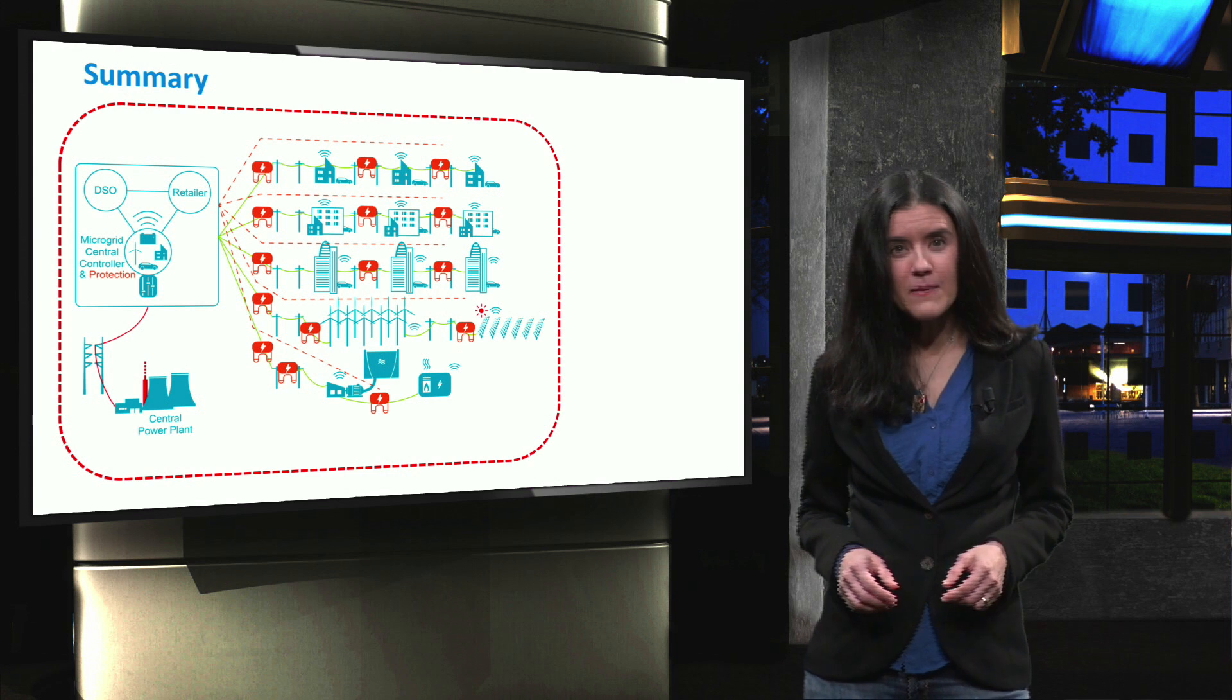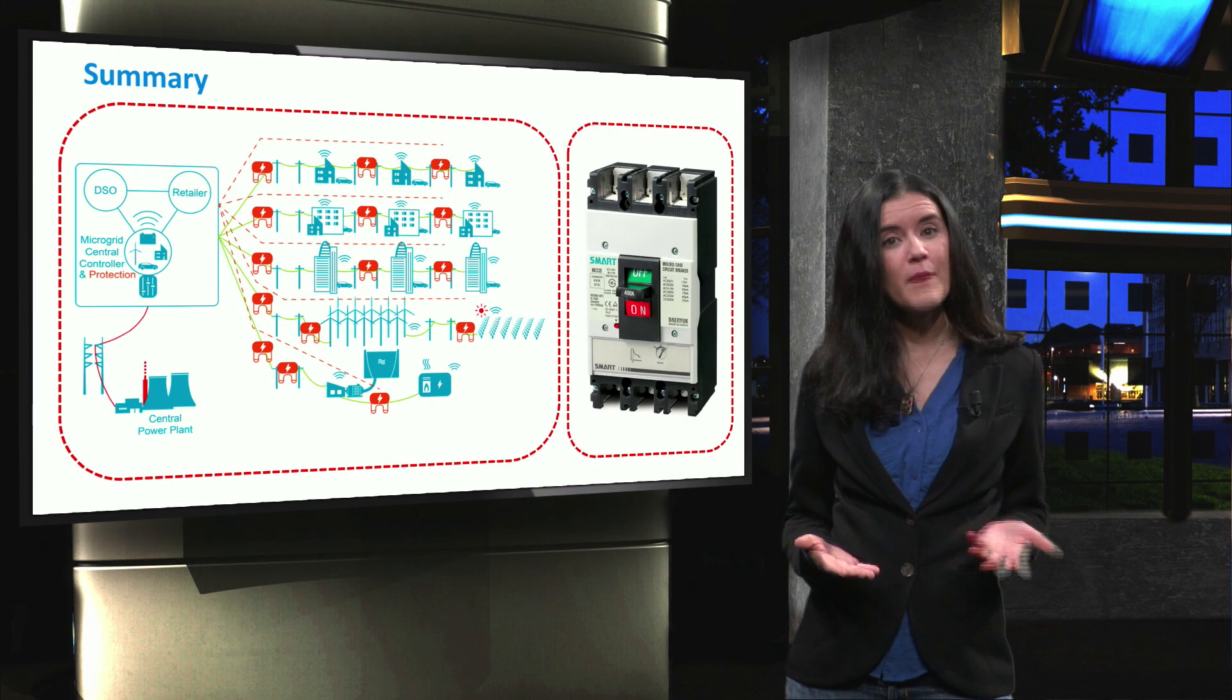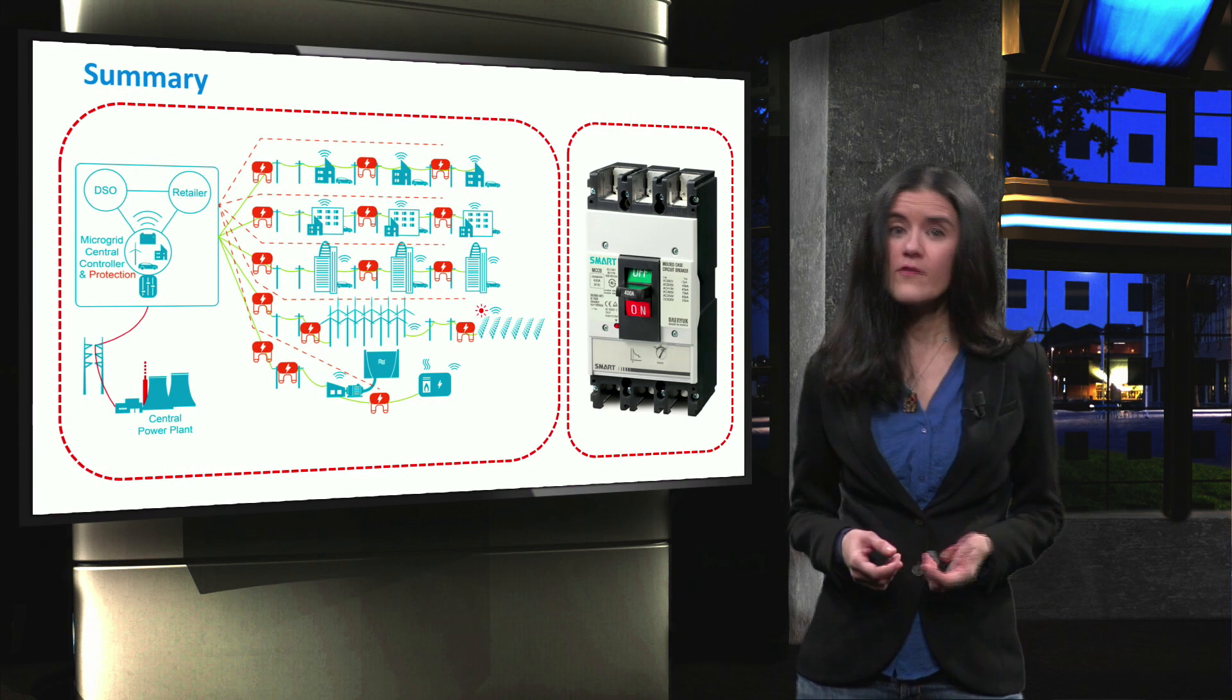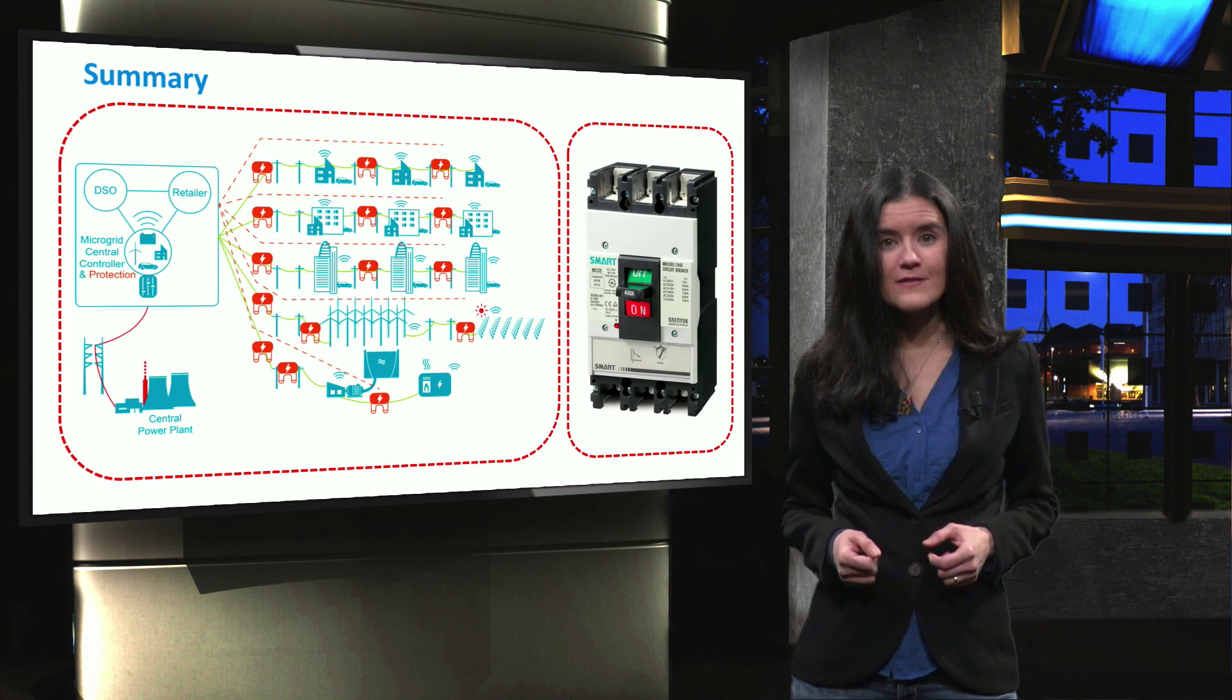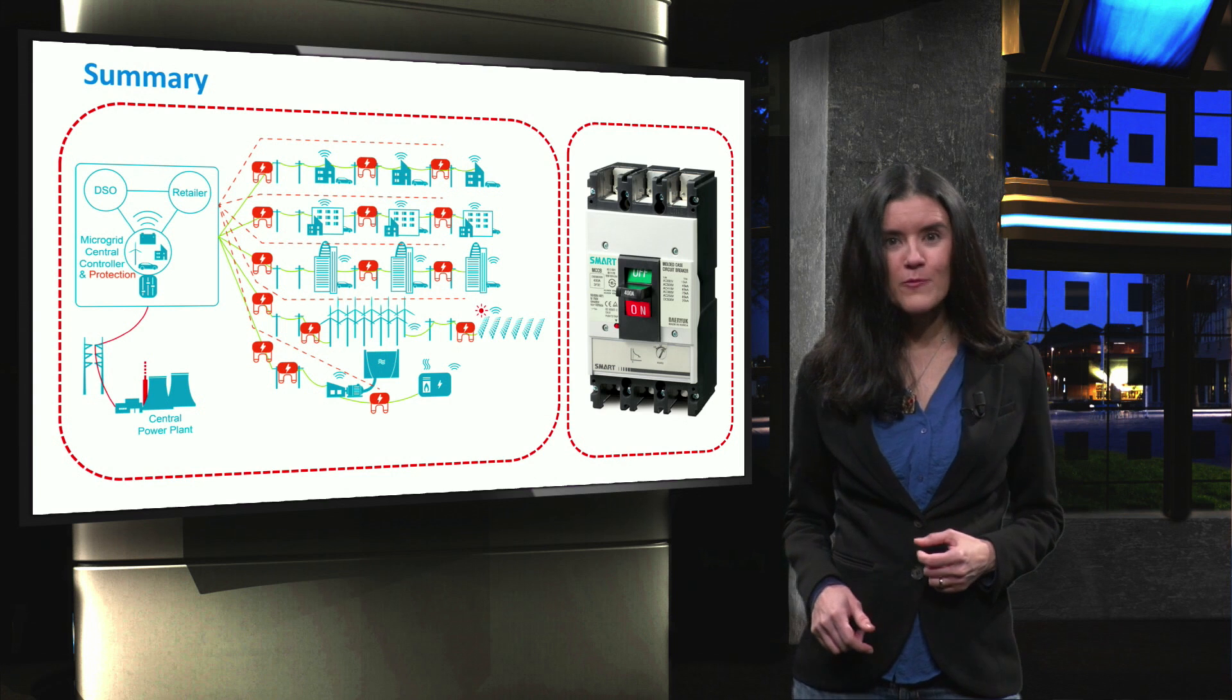Additionally, we looked at the main protection devices that are used both in power systems and microgrids, which are fuses, circuit breakers, and relays. See you in the next lecture to learn more about protection.